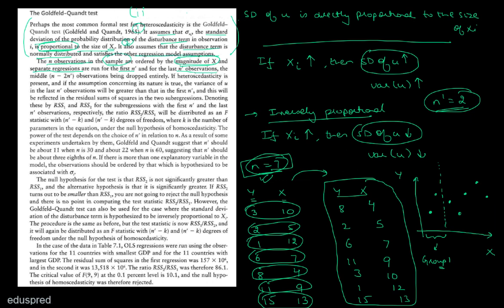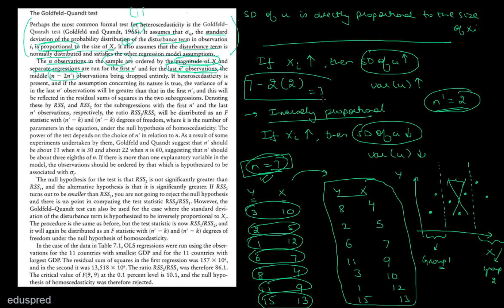We also run a regression for the last n' observations, so the last two observations form group number two. The entire sample is thus divided into three parts: group one (first two observations), the middle observations which we drop, and group two (last two observations). The number of middle observations dropped is n minus 2n', which in our example is 7 minus 4 equals 3.